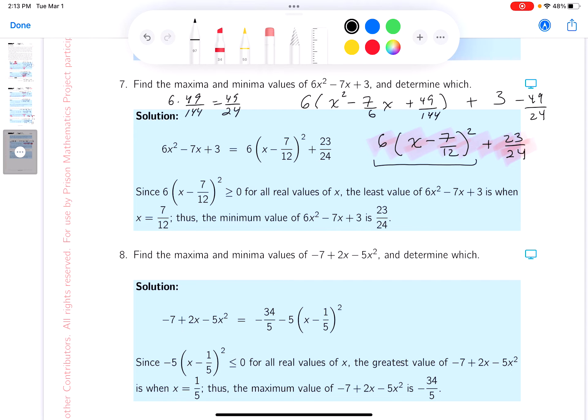You know, if I want to get this thing to disappear, it would disappear when x equals 7 twelfths. And then to get a value of 23 24ths there.